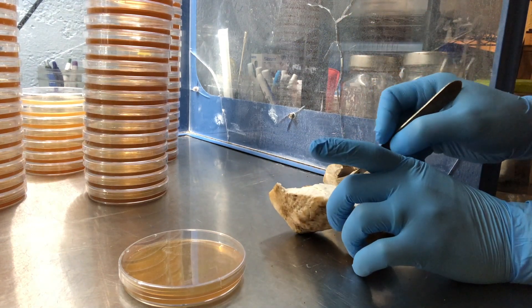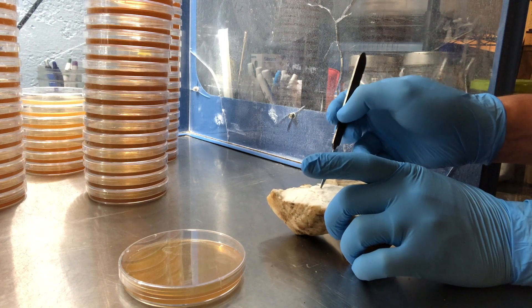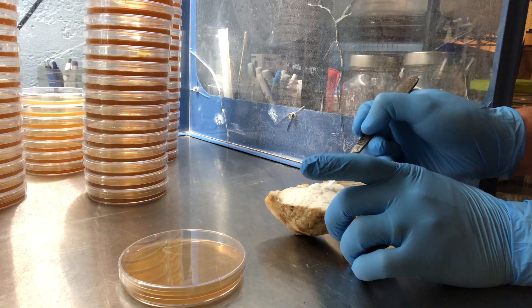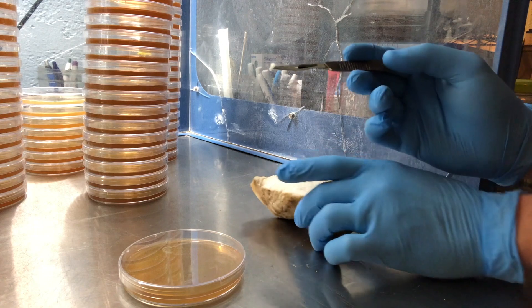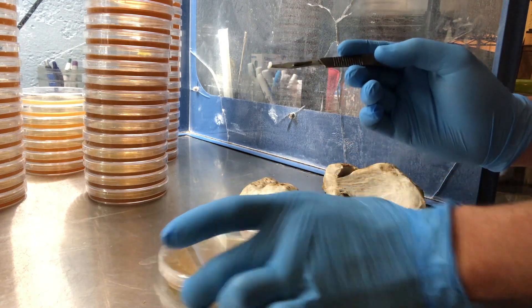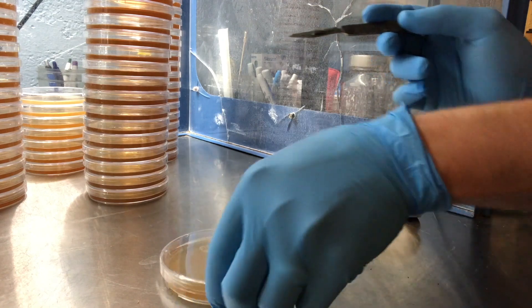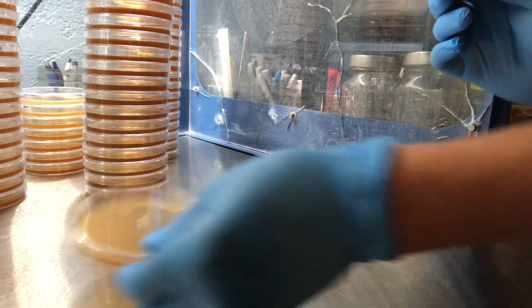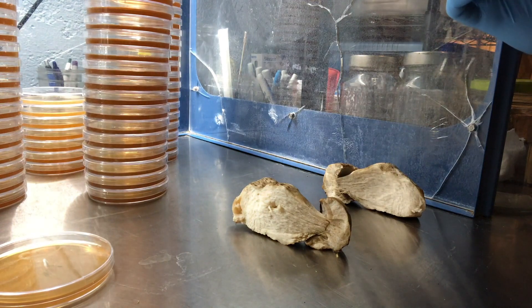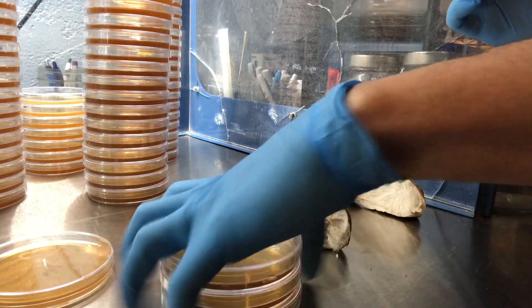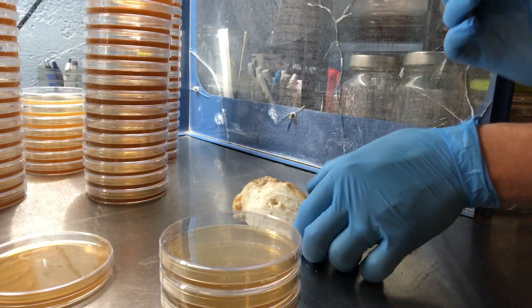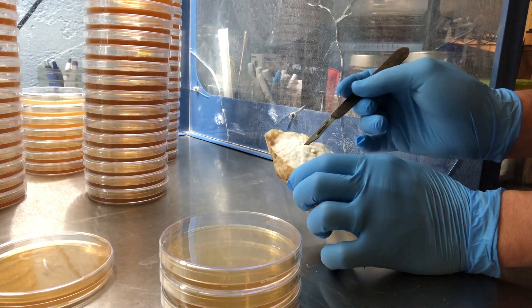Basically you just want to take a piece of this mycelium and then transfer it onto this petri dish. And there we go, we've got a cloned porcini mushroom. I'm gonna use a few more plates just to give it a better chance of good growth.